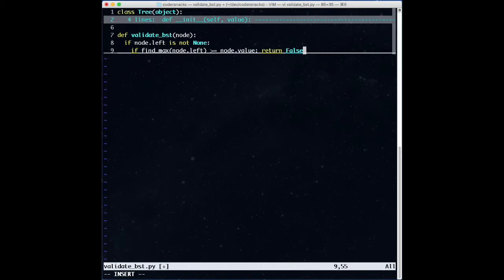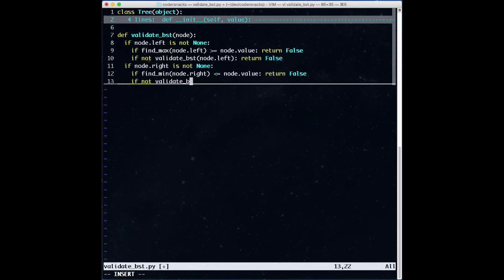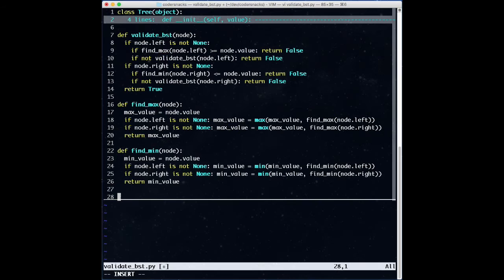In our validate BST method, if there's a left child, if the max value of the left subtree is greater than our value, we return false. All the nodes to the left should be less, thus the max should be less as well. Then, we validate the left subtree. This is necessary in the case all the nodes on the left are less, but the subtree isn't a valid BST. We do the same thing with the right, but using min instead.